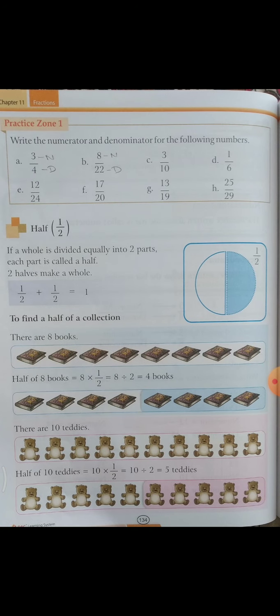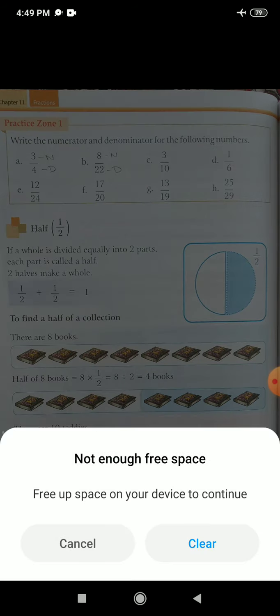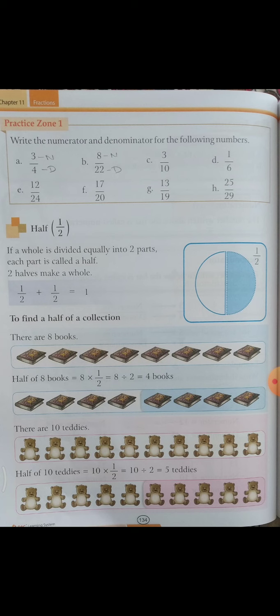Come to Practice Zone 1. Practice Zone 1 ke andar keh rahe hain: write the numerator and denominator for the following numbers. Ye wala question aapne apni notebook ke andar solve karna hai. Iske andar numerator and denominator mention karna hai. Jaise A part ke andar aap likhenge 3 by 4, toh 3 is the numerator and 4 is the denominator. Aise hi iske saare remaining parts bhi aap notebook ke andar solve karenge.